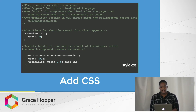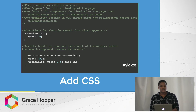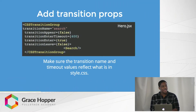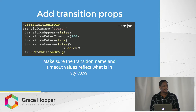So I'm saying when it starts, I want the width to be 0. By the time the animation ends, I want the width to be 90% of its container, and it's going to take place over a time period of 0.4 seconds. Then we're going to add properties to the CSS Transition Group tag. It's very important that these reflect what is in your CSS. For example, I have transition name equals search, because in my CSS, all of my class names began with search.